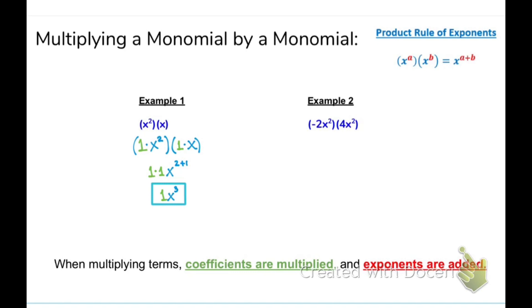Now let's look at the second example. We have negative 2 and 4 as the coefficients. So I'm going to multiply negative 2 times 4, and then do the variables: x and x, adding the exponents 2 plus 2. So negative 2x squared times 4x squared is going to be negative 8x to the fourth power. Perfect.